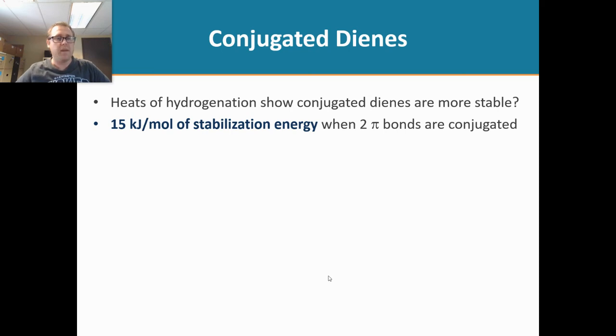Class, I have a question for you. If you look at this molecule here, versus a conjugated diene, which one do you think is more stable?